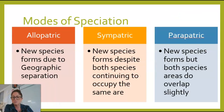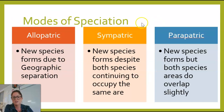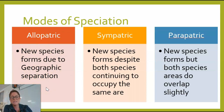For speciation, there are three modes: allopatric, sympatric, and parapatric. Allopatric means they are separated by a geographic barrier — a mountain, a canyon, an ocean. Some kind of geographic barrier separates the populations, which could lead them to accumulate lots of microevolutionary changes, which then could lead to a new species.